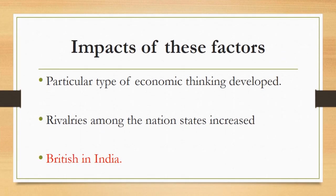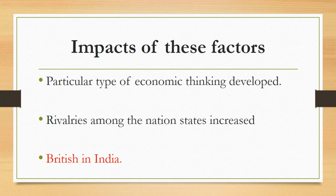Due to the combined effects of these factors, a particular type of economic thinking developed — giving birth to the economic thought called mercantilism. However, the name 'mercantilism' was given later on; since it was an evolutionary process, we cannot specify any specific time for the development of this theory. Secondly, rivalries among nation states also increased, as the big powers of that time followed the strategy of colonization — colonizing states to expand their trade and sell their goods to those colonies. We can take the example of the British in India in this regard.